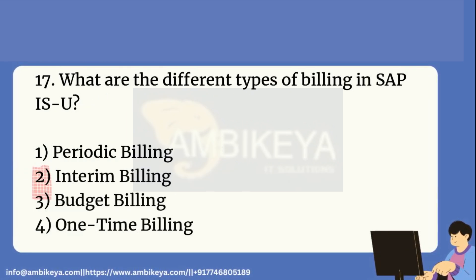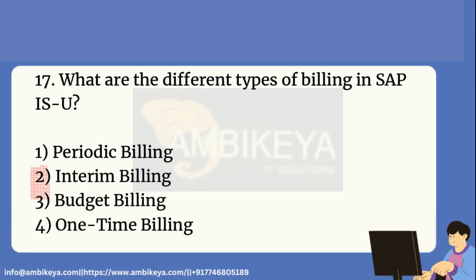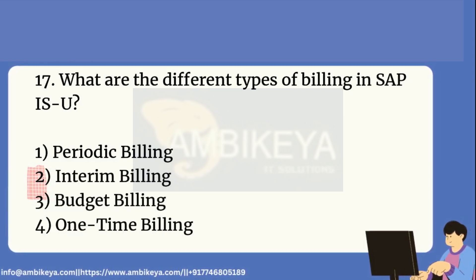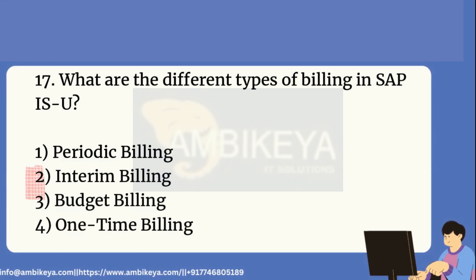Question 17: What are the different types of billing in SAP IS-U? 1. Periodic Billing, 2. Interim Billing, 3. Budget Billing, 4. One-Time Billing.